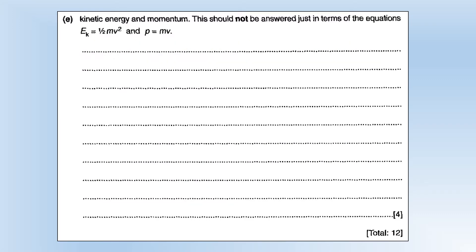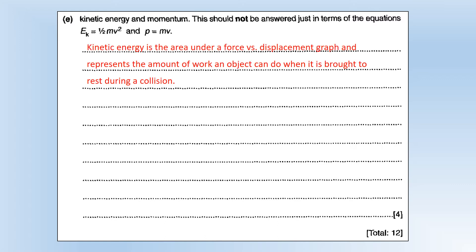The final one is the difference between kinetic energy and momentum. This should not be answered just in terms of their equations — it's about what their nature is. Kinetic energy is the area under a force versus displacement graph, and it is the amount of work an object can do when you bring it to rest during a collision, or the amount of work you have to do to accelerate an object from stationary.